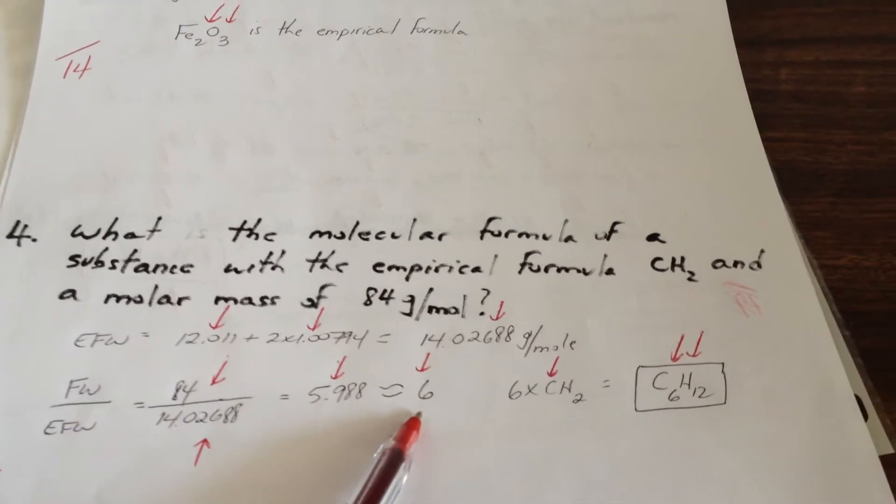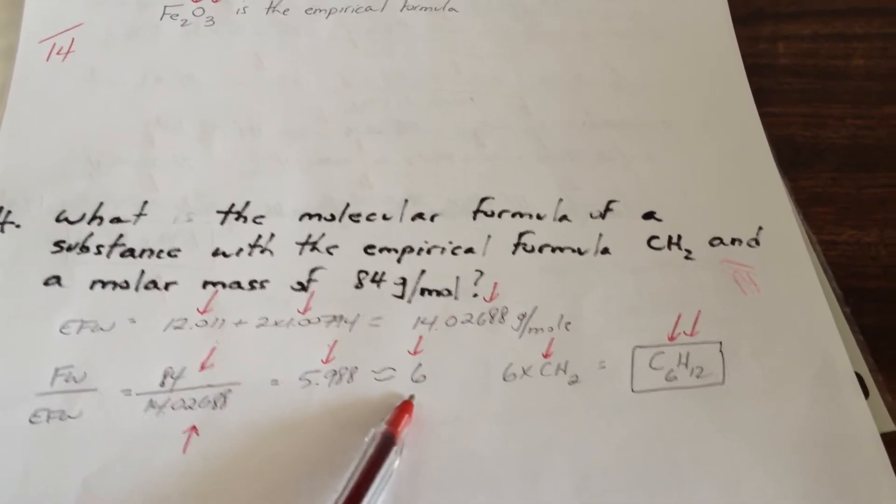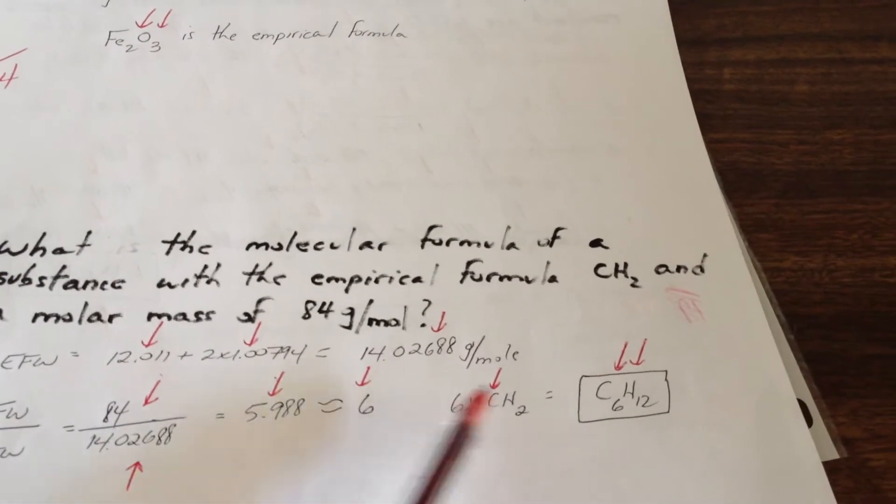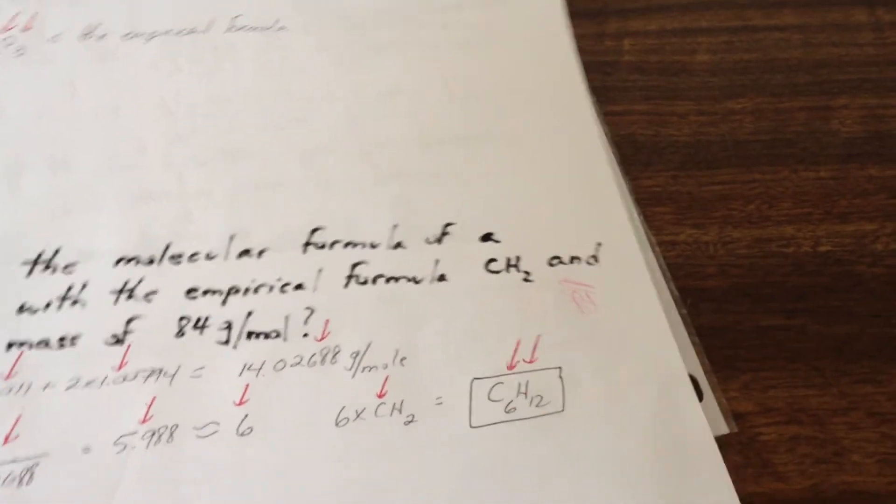which is very close to 6, well within the acceptable tolerances for a real world experiment. And when we multiply 6 by CH2, we get the formula for glucose, C6H12O6.